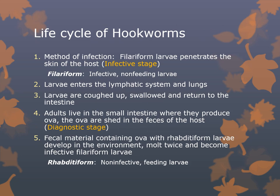In the hookworm life cycle, the infective filariform larva penetrates the skin of the host — usually between the fingers and toes. This worm can only survive without a host in the environment for about two weeks. The larva enters the lymphatic system and lungs, is coughed up, swallowed, and returned to the intestine. Adults live in the small intestine where they produce ova, shed in feces — the diagnostic stage. Fecal material containing ova with rhabditiform larvae develops in the environment; they molt twice and become infective filariform larvae.